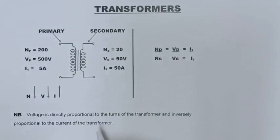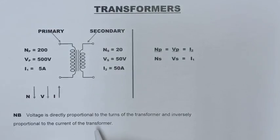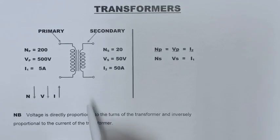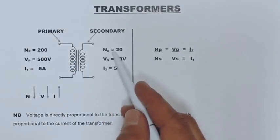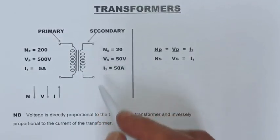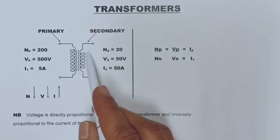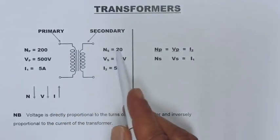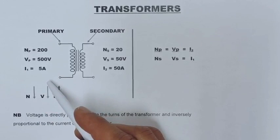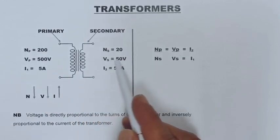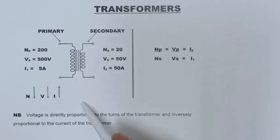Let's look at what 'directly proportional' means. It simply means that if we have two quantities and one quantity goes up by a certain percentage, the other one goes up as well. In this case, we have 200 turns on the primary and 20 turns on the secondary — the turns went down by a factor of 10. Because voltage is directly proportional to turns, the secondary voltage also goes down by a factor of 10.